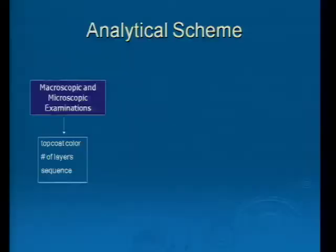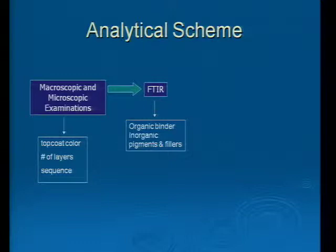We used our current analytical scheme for comparative paint samples, starting with macroscopic and microscopic examinations. We recorded the top coat color, the number of layers, the sequence of the layers, and the substrate. We then went on to FTIR, analyzing for the organic binder and any inorganic pigments and fillers in the sample. We used a microscope accessory on the FTIR, a diamond compression cell for our analysis, and our detector cuts off at 650.